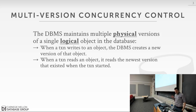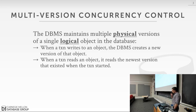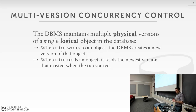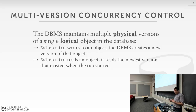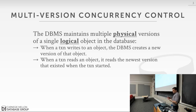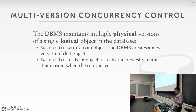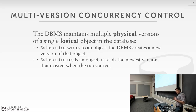We sort of saw this last class when we were talking about OCC. We talked about how transactions would maintain a private workspace, and any time they wrote to or read an object, they would copy it into their private workspace. That was sort of like maintaining multiple versions, except the version the transaction generated was only visible to itself — it was local to the transaction.